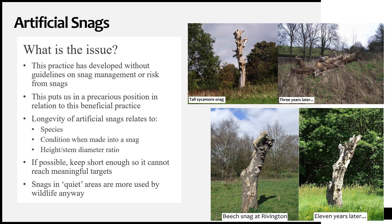Basic common sense would be to set the height of the snag so it couldn't reach any static target of value — a path, a road, a railway line, a building that may be occupied, and so on. However, in some situations one might accept the short-term risk of a taller snag for the sake of its benefits to site biodiversity, as long as there was a commitment to re-inspect and eventually deliberately remove it.